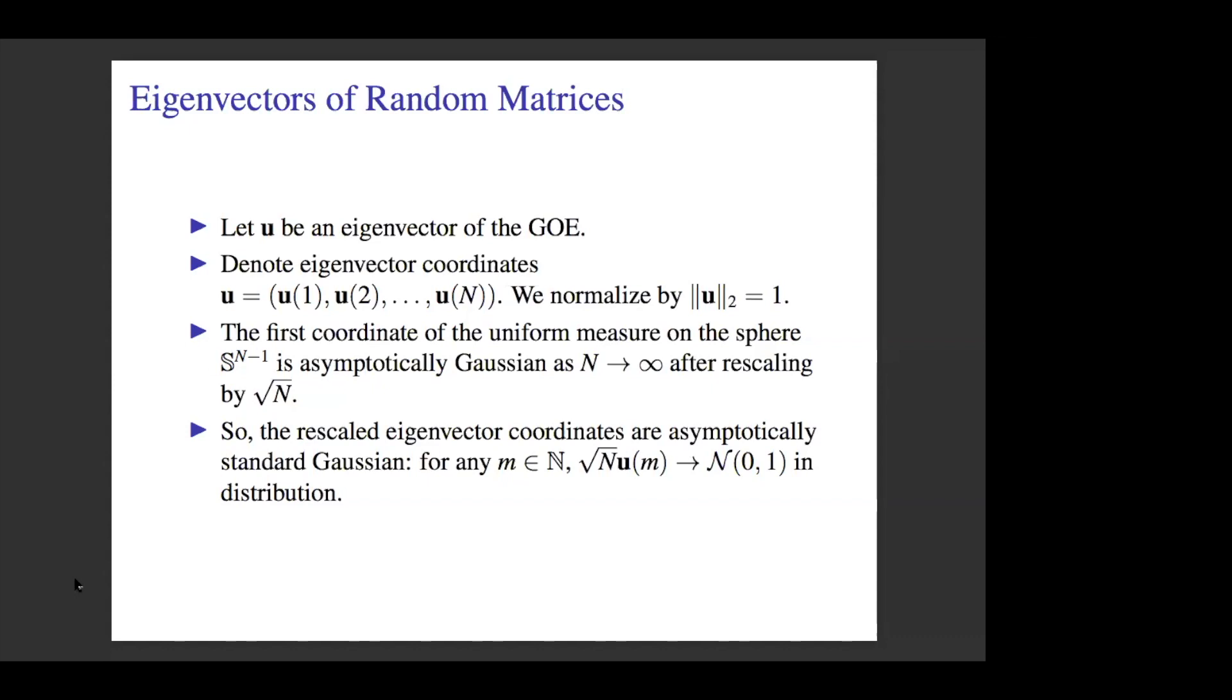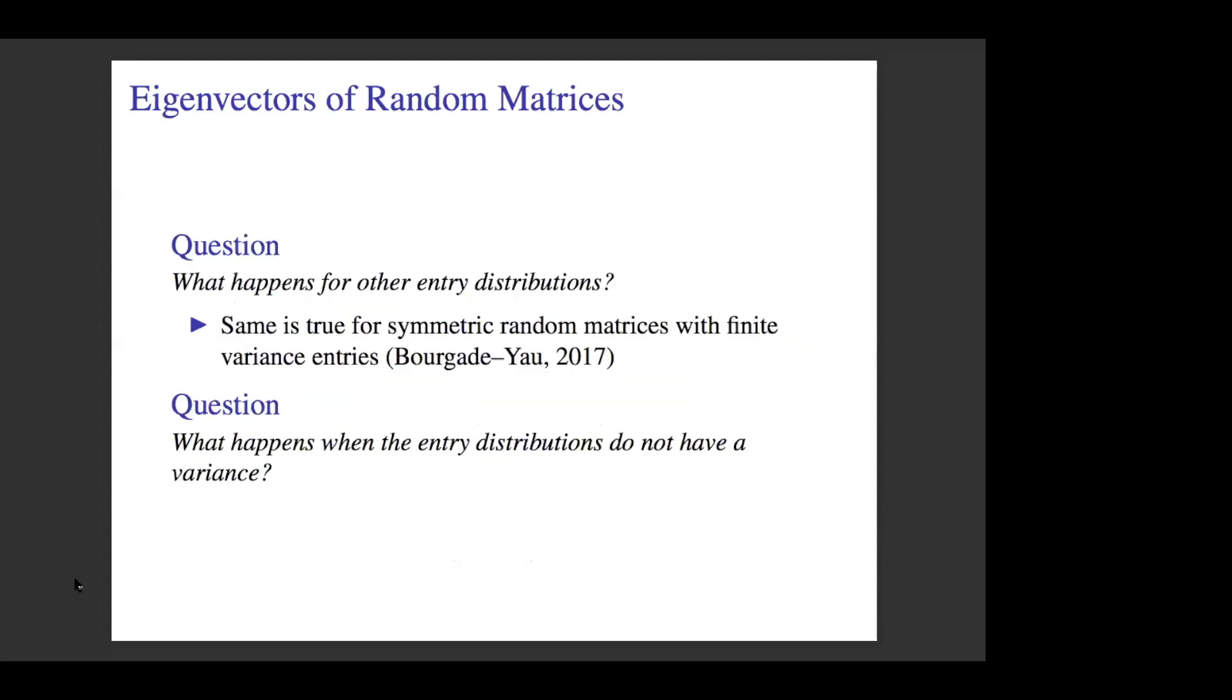Some questions arise, similar to the central limit theorem in probability: what happens for other entry distributions? This was resolved a few years ago by Erdős and Yau. Basically, the result is if you have a symmetric matrix with finite variance entries, then you also have Gaussian entry distributions for the eigenvector. Today I want to talk about what happens to both eigenvectors and eigenvalues when the entry distributions do not have variance. Actually, it gets a little more complicated and interesting.